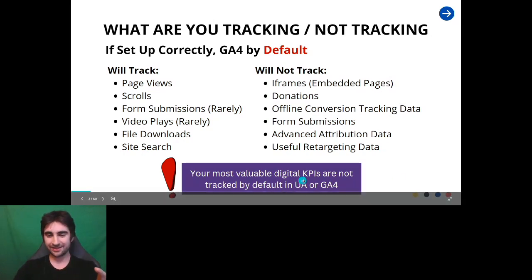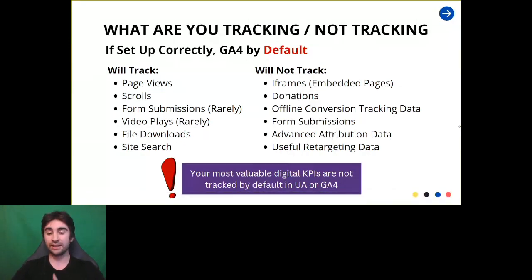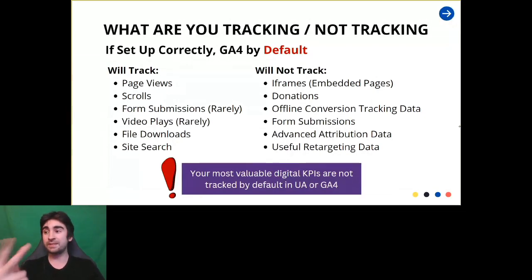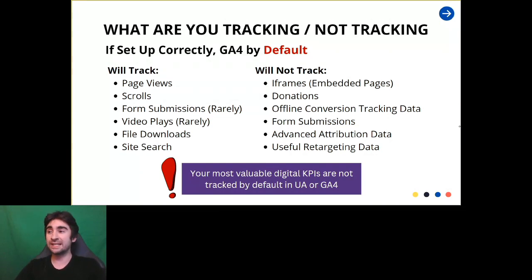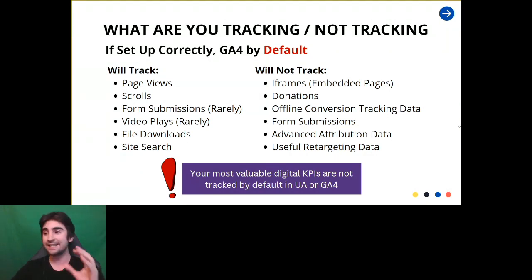By default, here's the key point: your most valuable digital key performance indicators are not tracked in Google Analytics 4, and they're not tracked in UA. So donations, most of your form submissions — service forms, contact forms — any embedded pages or iframes: that data is not going to be available in your analytics dashboard. It's not being tracked, it's not being measured, there's no way to get that data back. That's the data loss we're talking about and that's what we're trying to protect.